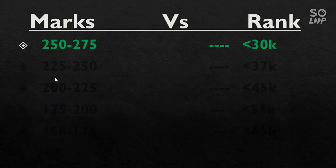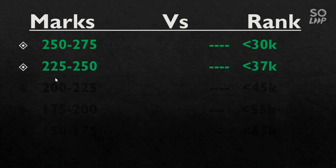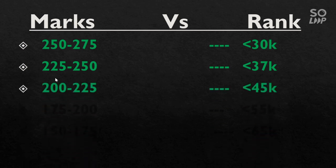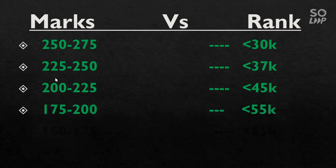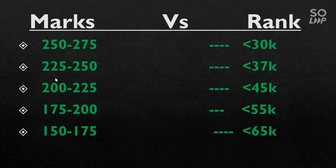For marks 250 to 275, your rank will be under 30000. For 225 to 250, under 37000. For 200 to 225, your rank will be under 45000. For 175 to 200, your rank will be under 55000. And for 150 to 175, your rank will be under 65000.